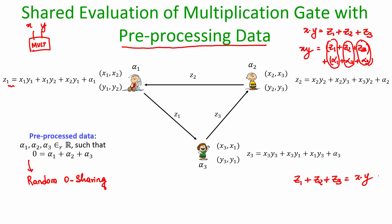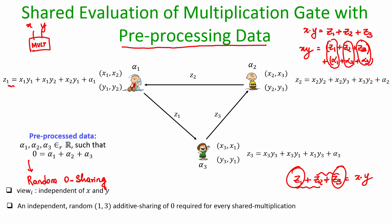P1 has two pieces, P2 has two pieces, and P3 has the first and third piece — so X dot Y is available in a replicated secret shared fashion. Now let us verify that the privacy of X dot Y, X, and Y is preserved in this new process.